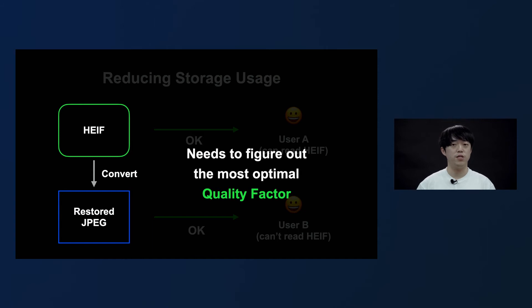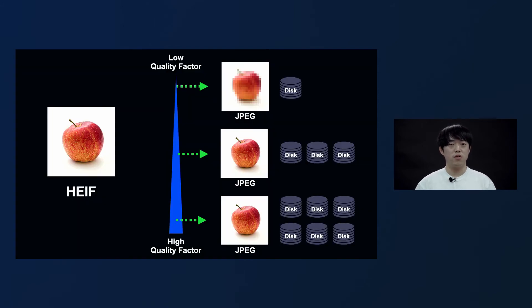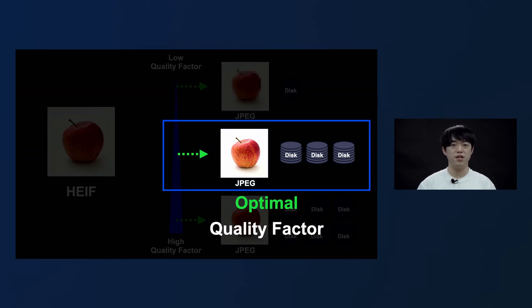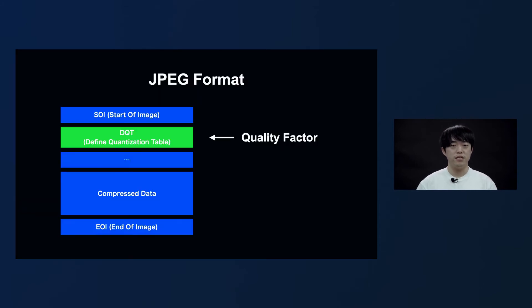At this point, figuring out the most optimal quality factor is very important. Quality factor is related to the image's quality and its file size. If we set the quality factor too low, the file size decreases but we end up with poor image quality. If the quality factor is set too high, the image quality will be the same as the original but the file size becomes too big. In the JPEG file structure, the DQT plays the role of a quality factor. So we assumed that if we restore a JPEG file from the HEIF file and use the DQT from the original JPEG file in its original state, we will be able to generate a JPEG file with similar image quality and file size as the original. Because JPEG restoration had to be done in real time every time a request came in, it was difficult to use a complex image quality check method, so we started working based on this simple assumption.